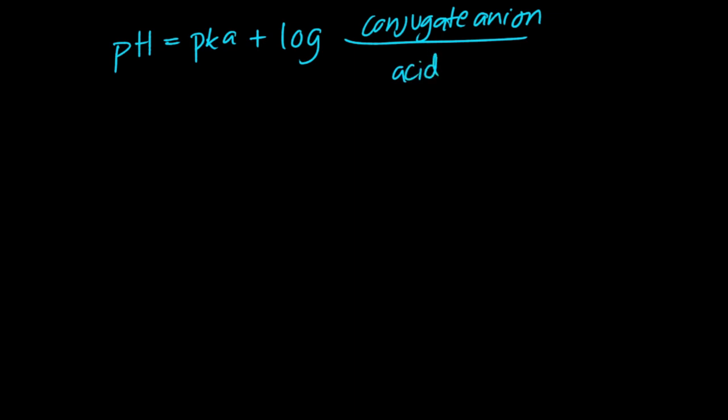So to answer this question, we're going to use the Henderson-Hasselbalch equation, which goes like this. pH equals pKa added by the log of the ratio of the conjugate anion over acid. So in this case, our ratio will be the log of bicarbonate over carbonic acid.